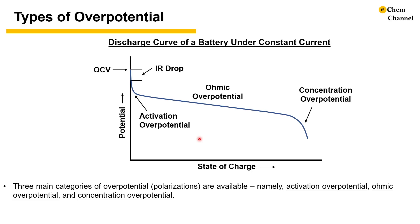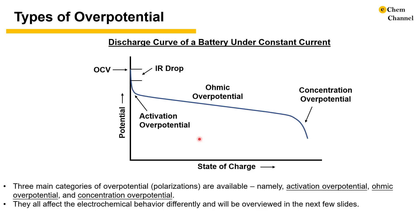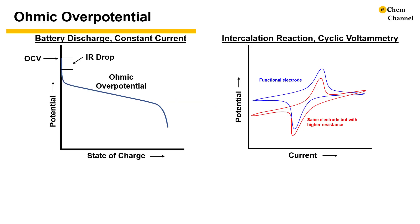This is a battery discharge curve under constant current conditions to showcase their presence at different states of charge. Next, we will use this example and others to elaborate on each overpotential.